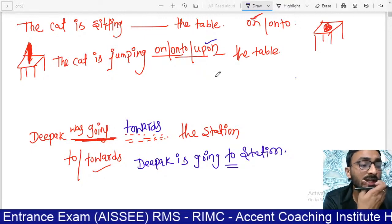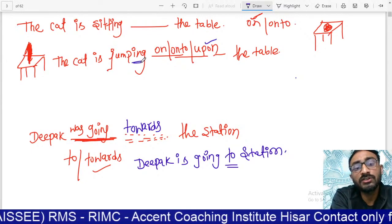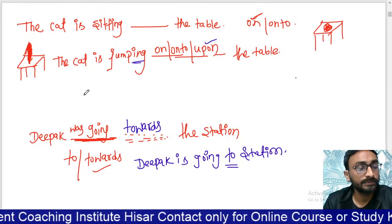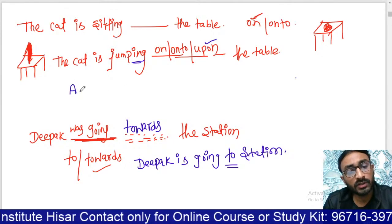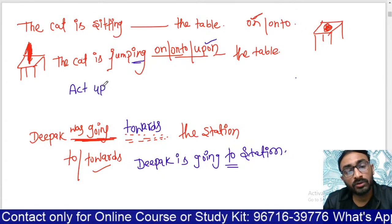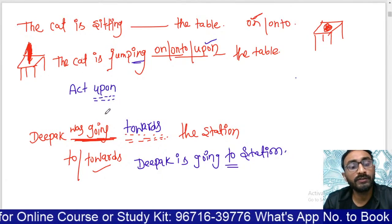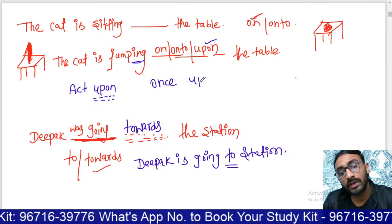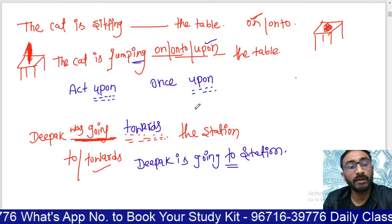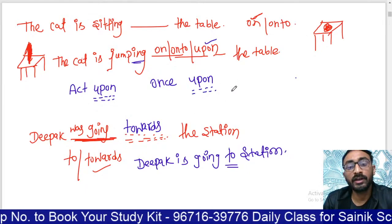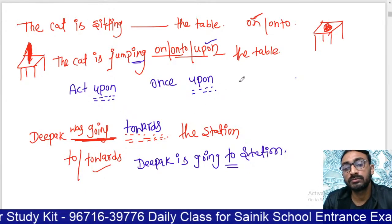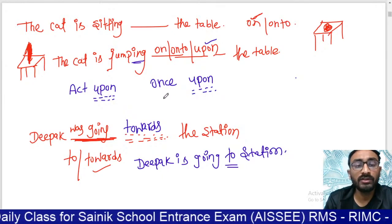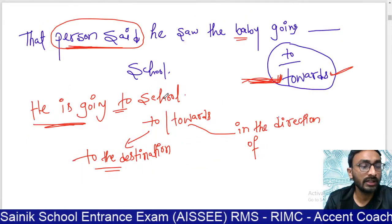If there is an '-ing' structure, it denotes continuous action, so we write 'upon.' There are also specific words that take 'upon': 'act upon' and 'once upon a time.' If you see the word 'act,' write 'upon' with it — 'he acted upon.' 'Once upon a time' also uses 'upon.'